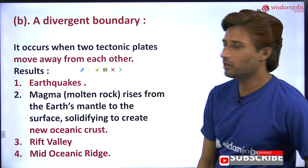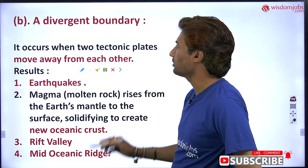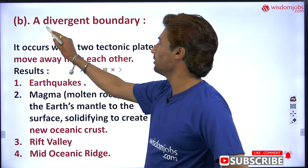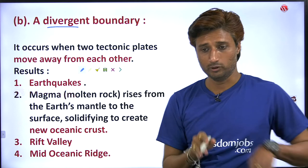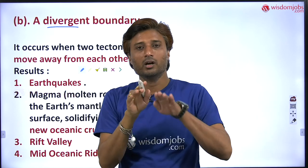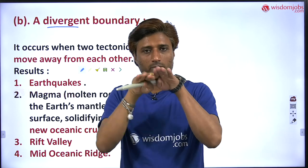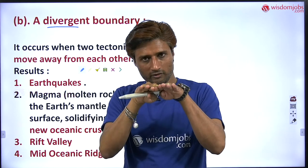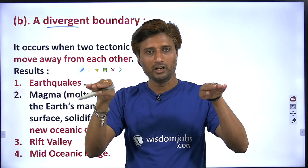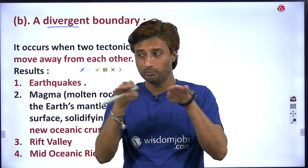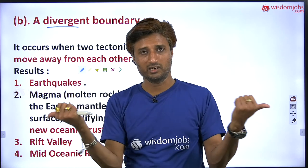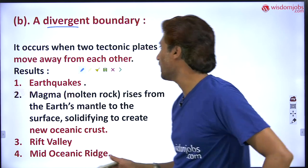Now let us go to the next part — a divergent boundary. What is a divergent boundary? The name itself says it is diverging. It is going apart from each other. Earlier they were close, now they are separating — in exactly the opposite direction.